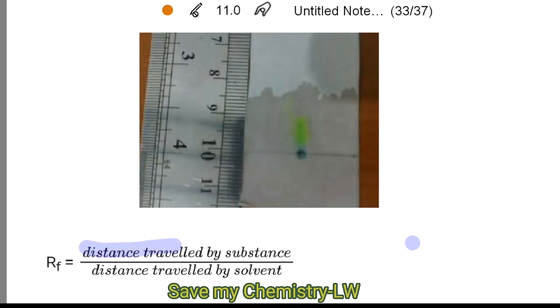Let's see this example, how to count the RF. We measure the distance traveled by substance using the ruler. Okay, see the sign, the green one. And then we measure the length of the spot using ruler. That is one centimeter.